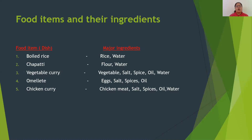Looking at all these dishes, we realize that the number of ingredients used may vary from less to more. We can also see that ingredients like rice, flour, vegetables, oil, and spices are obtained from plants, whereas ingredients like eggs, chicken meat, fish, honey, and milk are obtained from animals.